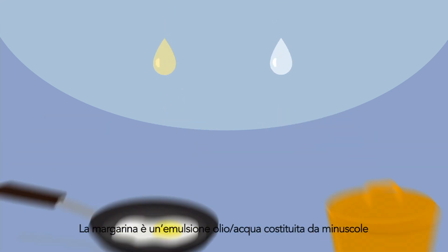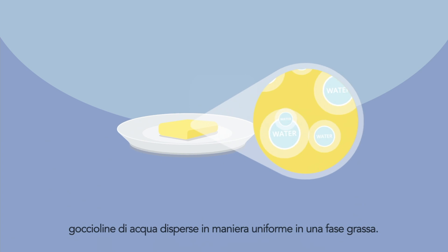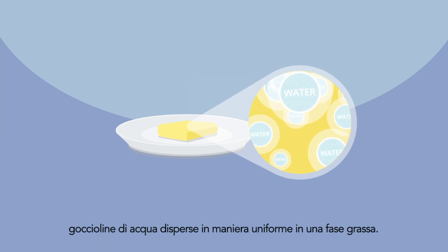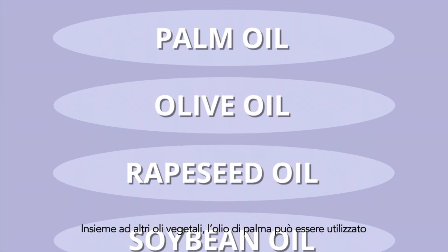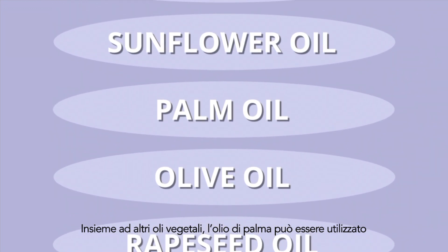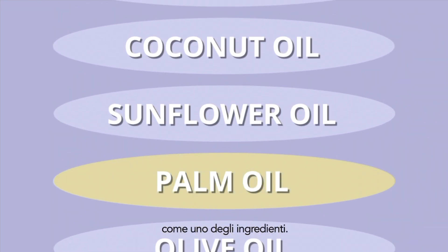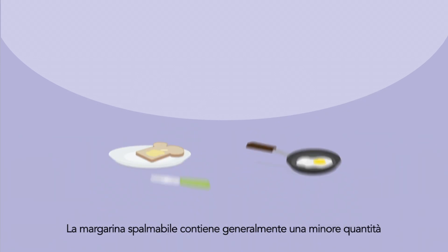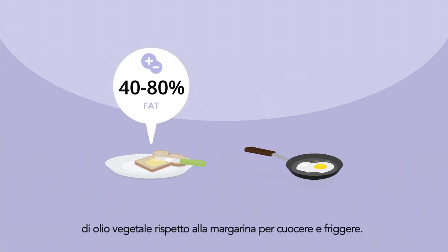Margarine is an oil-water emulsion consisting of tiny droplets of water dispersed uniformly through a fat phase. Together with other vegetable oils, palm oil can be used as one of the ingredients. Margarine for spreading contains usually less vegetable oil than margarine for baking and frying.